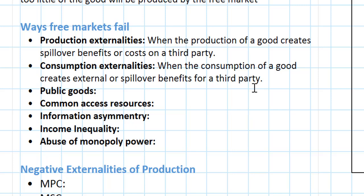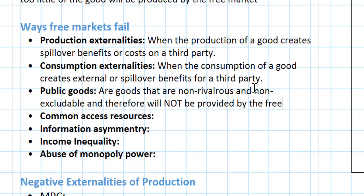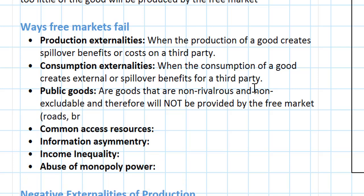The third type of market failure we'll examine are what we call public goods. Public goods are goods that are non-rivalrous and non-excludable — terms we will learn the specific definitions of in a future lesson — and therefore will not be provided by the free market. Some examples of public goods might be roads, bridges, lighthouses, and national defense. Without government providing these things, private firms and business people would have very little incentive to do so. Therefore the free market, without government intervention, would not produce many roads, bridges, lighthouses, or national defense — and this is considered a market failure.